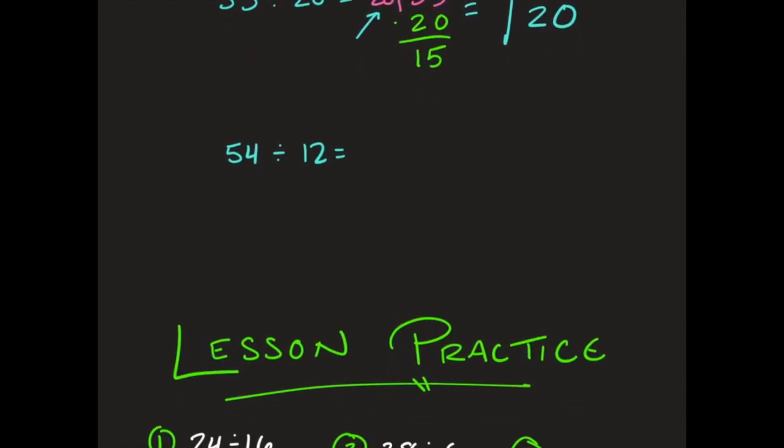One last one before our lesson practice. I have 54 divided by 12. How many times can 12 go into 54? I'm going to put 4. Four times 12 equals 48. When I subtract, I have 6 left over, so I would write remainder 6. But remember, we're turning that into our mixed number. So I have a full 4, I have 6 left over, what was I dividing by? 12. So 4 and 6 12ths.